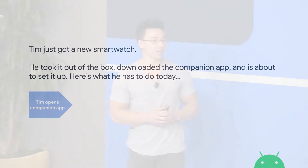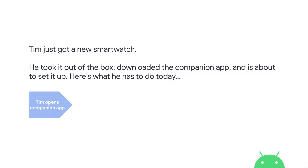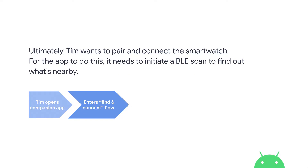Tim got this new smart watch and he wouldn't stop talking about all the exciting use cases he wanted to do: step tracking, calorie counting, and he was really excited to read his sleep graphs. All of these things require the companion app as the interface to look at graphs and long-term data, because the watch has a finite amount of storage but servers have a larger amount. So he unboxed it and downloaded the app.